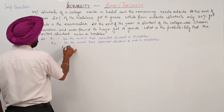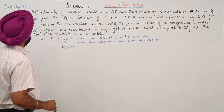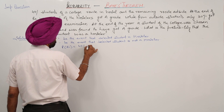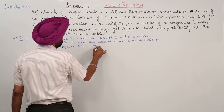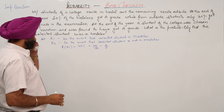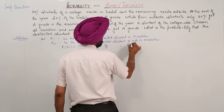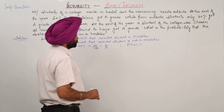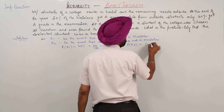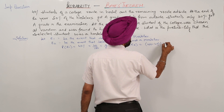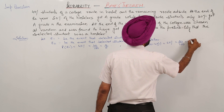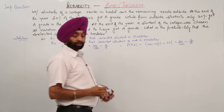Now, probability of E1: it is given that 40% of students reside in the hostel, so P(E1) = 40/100 = 2/5. And probability of E2 for the outsiders: since 40% are hostlers, it means 60% are not hostlers. So P(E2) = 60/100 = 3/5.